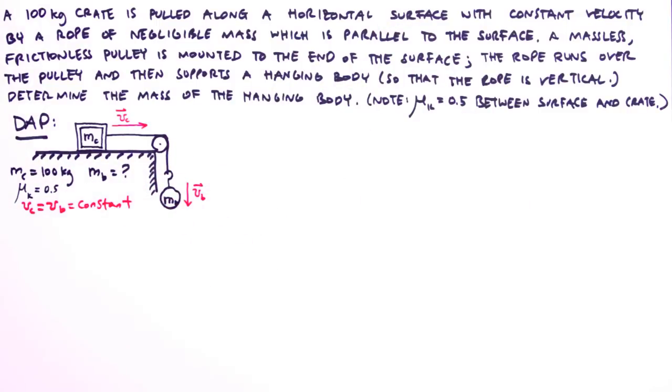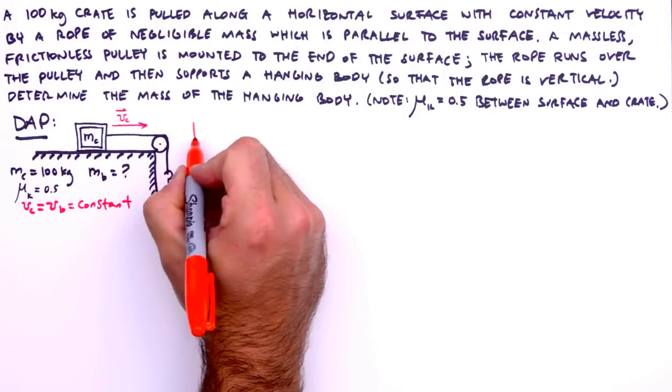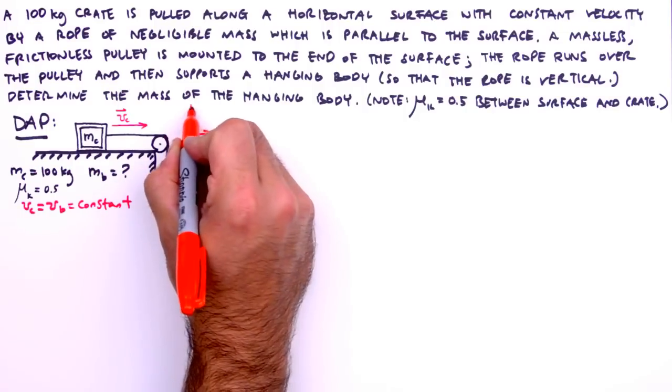Of course, no picture or diagram is complete without an assigned coordinate system, so we'll indicate our choice here. Positive x-axis to the right, positive y-axis straight up.